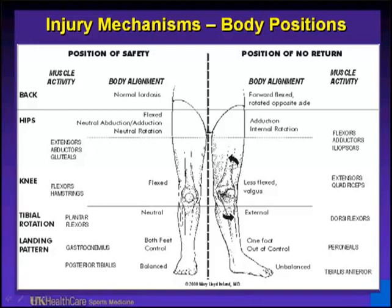Think about injury mechanisms — body positions, the position of safety shown on the left and the position of no return shown on the right, a concept we wrote about in the Journal of Athletic Training 15 years ago. Think about body alignment — the position of the joints and the back — and then muscle activity. Muscles and their agonist-antagonist function work better when the joint is in a more flexed position. In the position of no return, the body alignment is more upright, the body is rotated to the opposite side, the hip is in adduction and internal rotation, the knee is less flexed and in valgus, the foot ends up pronated, and the tibia is externally rotated.